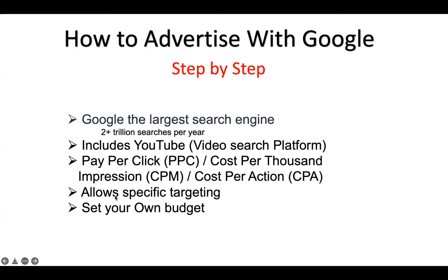Another big feature is specific targeting, which is also available in Facebook Ads. You can target your advertisement to be shown to people in a specific country, only to ladies or guys, any gender, and also to a specific age group. So age, gender, location, and keyword targeting are all available. This means you're not wasting money — your ad is shown specifically to your target audience.